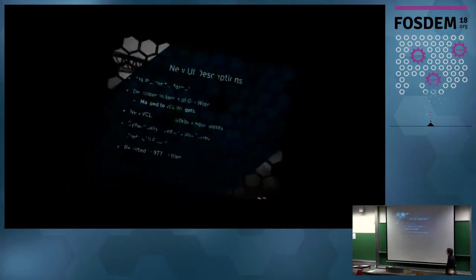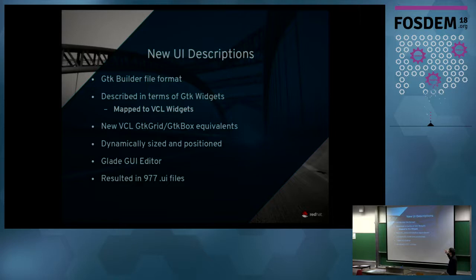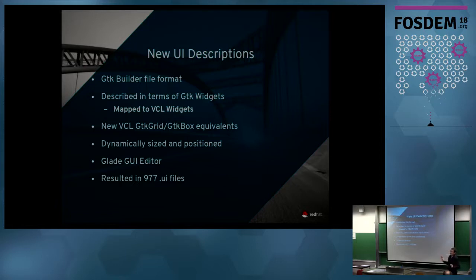We've moved to a situation where we now use the GTK Builder file format — our UI is described in terms of GTK widgets. We're not actually using GTK widgets; we use our own VCL widgets, but everything is described in the GTK file format and mapped at load time with our own loader. We added resizable widget equivalents to GTK Grid and GTK Box, so widgets dynamically size and position according to constraints describable in the Glade GUI editor. The result is about 1,000 UI files.